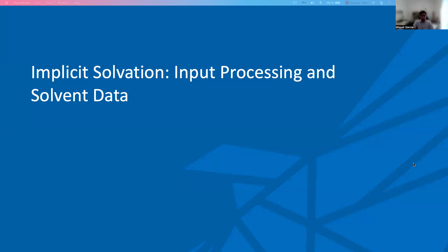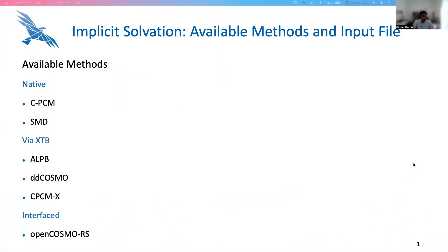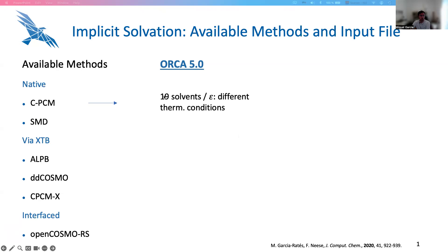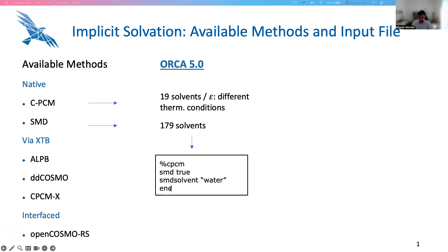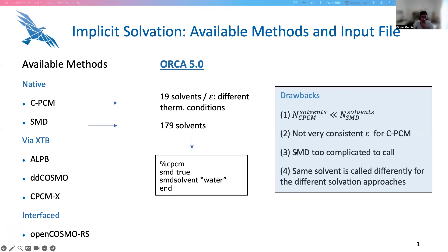The first point I want to talk about is the way the input is processed in ORCA. In ORCA 6.0 we have six different implicit solvation methods. Two of them, CPCM and SMD, are natively implemented in ORCA. Then we have the methods available within XTB: ALPB, DD-Cosmo, and CPCMX. And finally, the interface of ORCA with OpenCosmoRS. There are some disadvantages in ORCA 5.0 — for CPCM, we only have about 20 solvents in our internal database, and the epsilon for the solvents is not fully consistent, sometimes corresponding to different thermodynamic conditions. The SMD model has many more solvents, almost 180, but it's not easy to request; we always have to add four lines. Additionally, if a solvent exists in different solvation methods, the solvent input name may differ in ORCA 5. So we want some homogenization, and all these points have been fixed in ORCA 6.0.